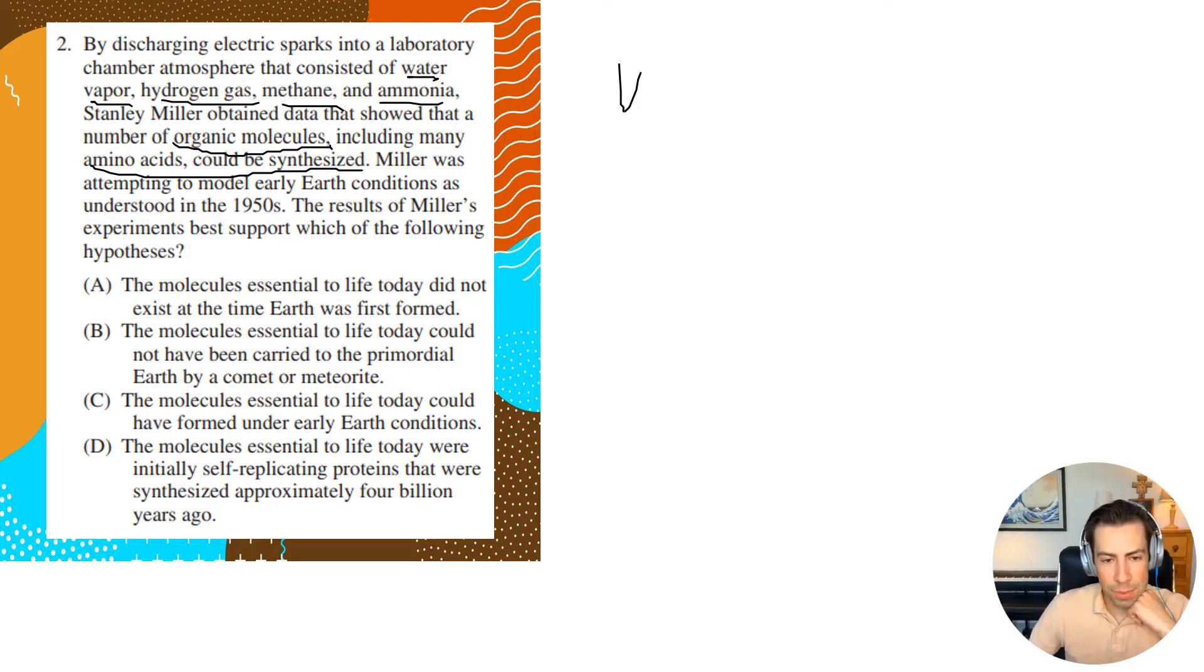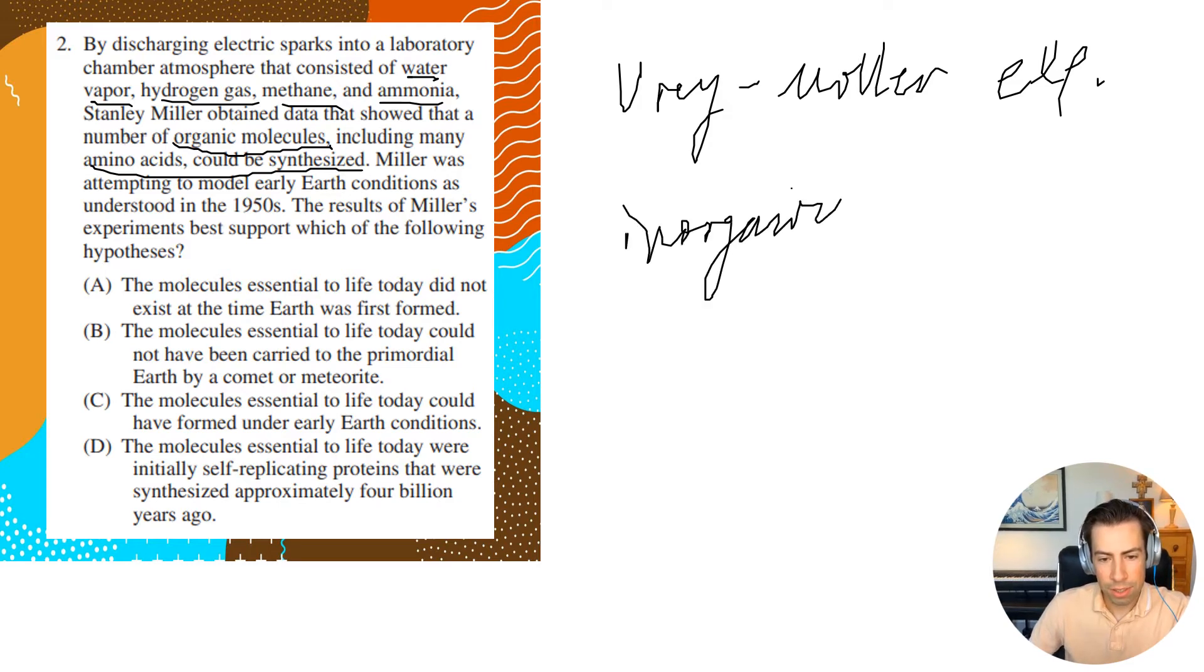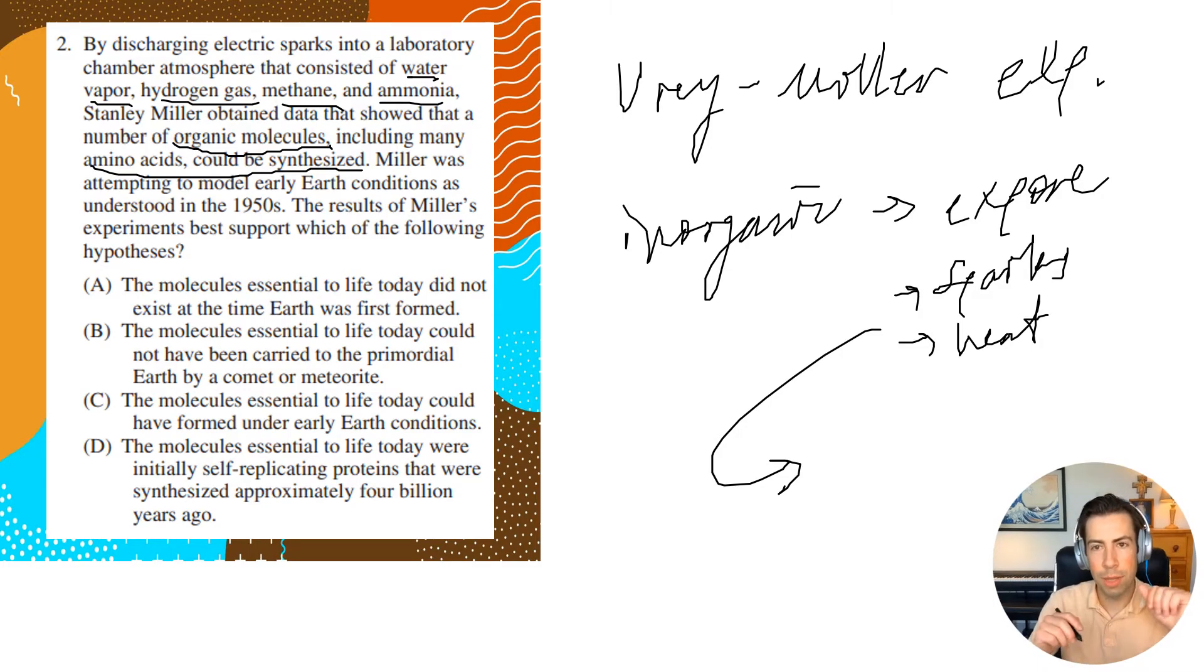So if you guys remember this, this is basically the Yuri Miller experiment. And basically what it said is if you take inorganic molecules and you expose them to like basically early earth conditions, so like sparks, heat, and I think that's basically it. What it showed was that you can get out of that, what he referred to as like a primordial soup, you can get what are called amino acids. And then hopefully you know that amino acids are like the building blocks to life, right?